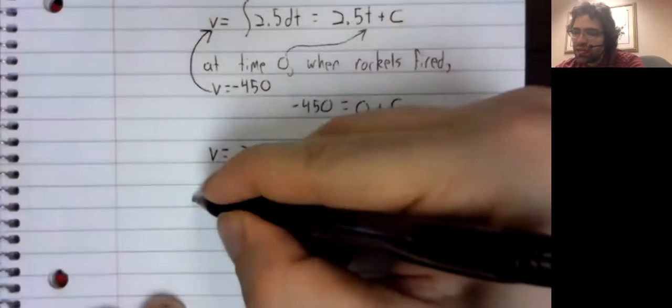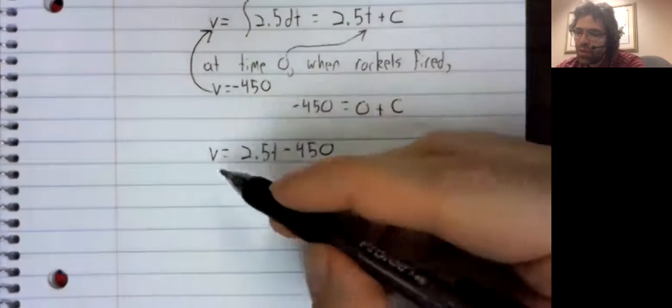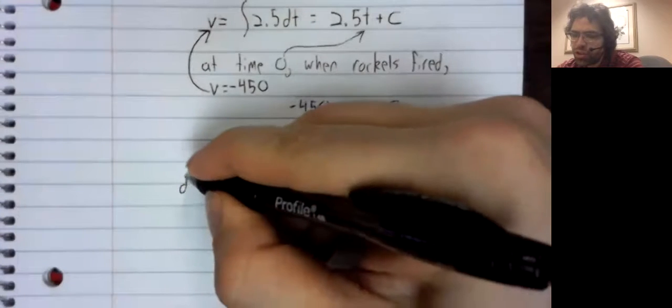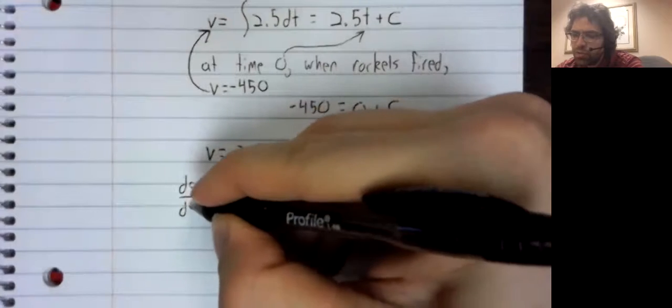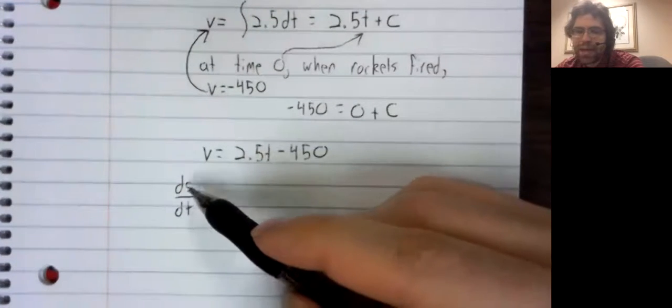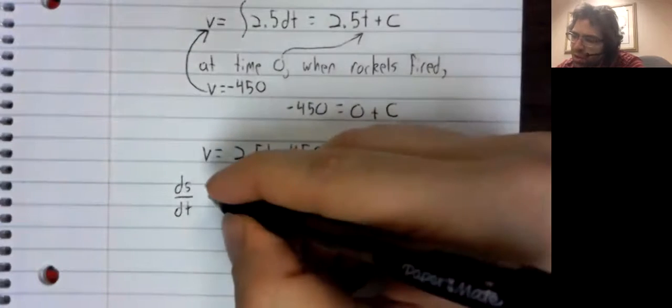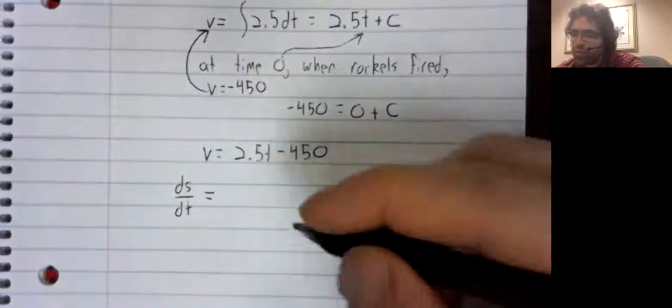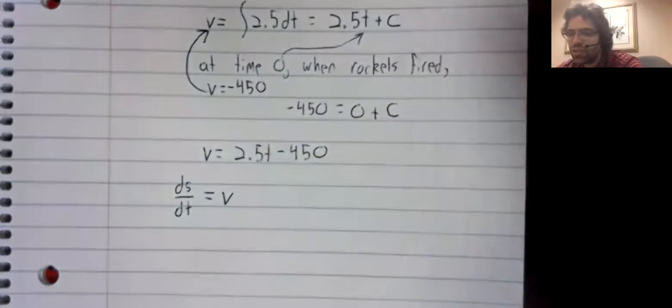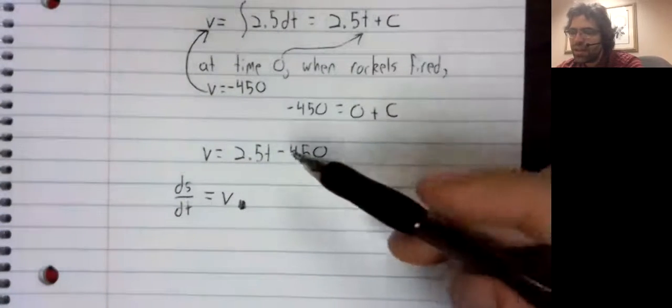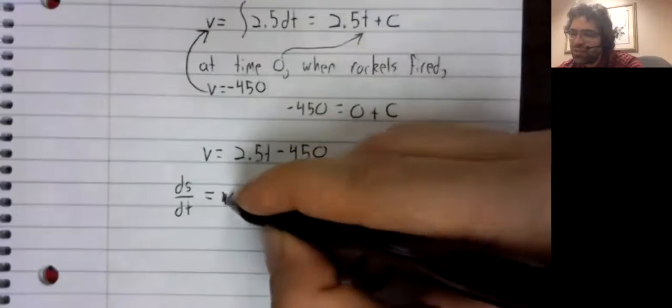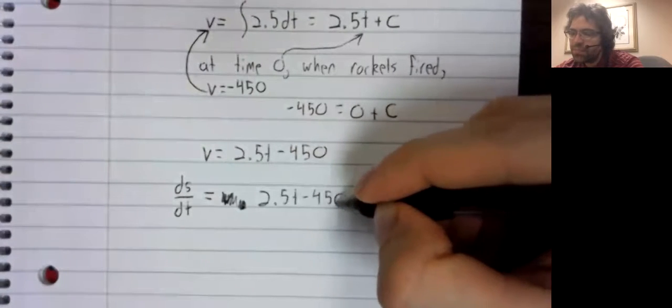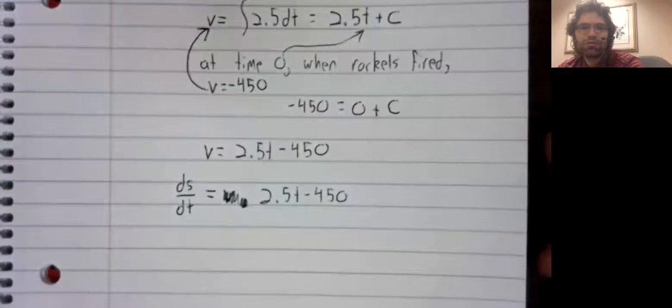Now we'll repeat this process. The velocity is the derivative of the height function, most traditionally represented by an S from a German word, Streck, I think. The derivative of the height with respect to time is the velocity. And we know what this velocity is. 2.5T minus 450.